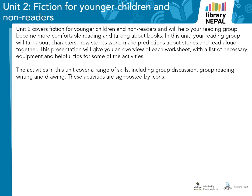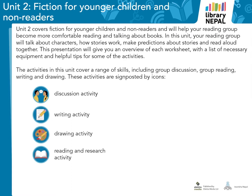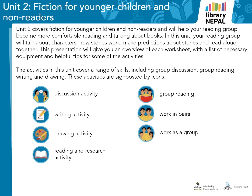The activities in this unit cover a range of skills, including group discussion, group reading, writing and drawing. They include working independently, in pairs and as a group. These activities are signposted by the icons that you can see on screen. The icons indicate the suggested way for using the activity, but this is not necessarily the only way. Most of the activities can be adapted in any way that you choose. For example, writing activities can be done as speaking activities if you don't have writing materials. Pair work can be done as a whole group, and whole group discussions can be done in pairs. The icons are there as guidance, so think about what will work best in your own situation and feel free to be creative.